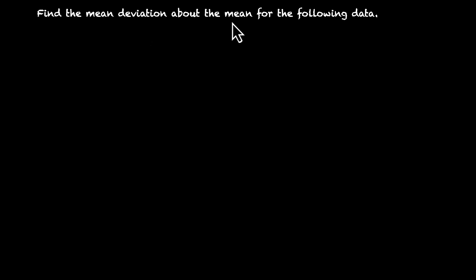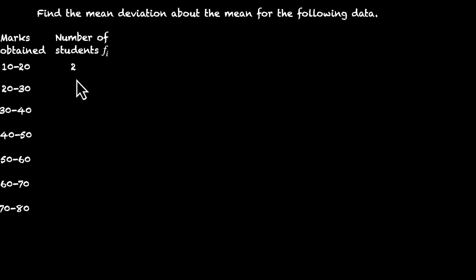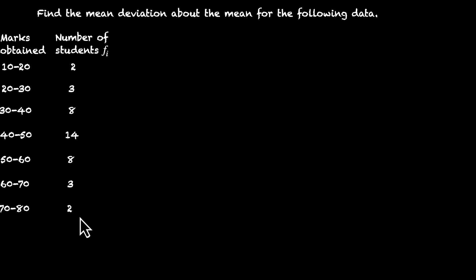Find the mean deviation about the mean for the following data. We have marks obtained and number of students: class intervals 10–20, 20–30, 30–40, and so on, with number of students 2, 3, 8, 14, 8, 3, and 2. Pause the video and try this on your own — find the mean deviation about the mean for this data.